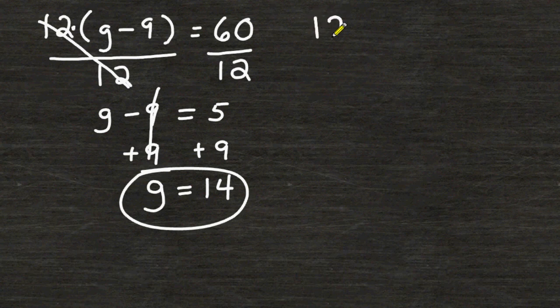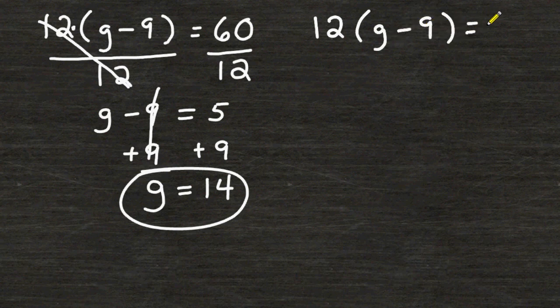Now we are going to try a different strategy to solve the same equation. So we are going to rewrite 12 times the difference of g and 9 is equal to 60. Because we have a 12 on the outside of parentheses we may use a distributive property to rewrite our equation.